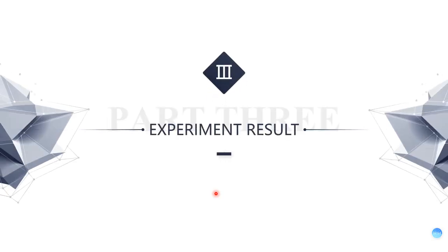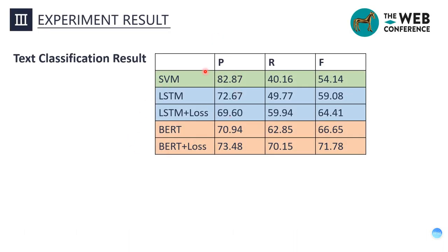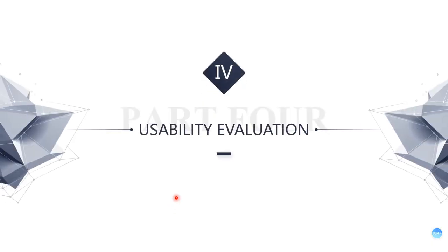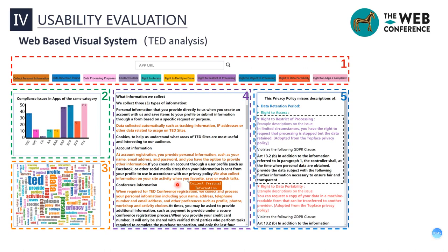Next, I will present the experiment results. We use 10-fold cross-validation. The classification results shown in the table indicate that BERT is better than LSTM, and both outperform SVM. The weighted loss function has a significant improvement on classification. Our method reports 1180 issues in 304 privacy policies, with precision of issue reporting reaching 90% and recall reaching 89%.